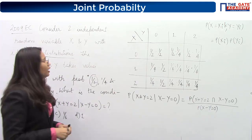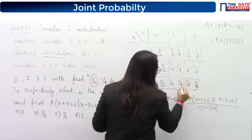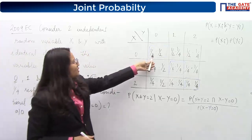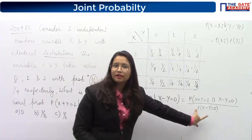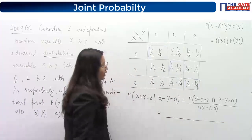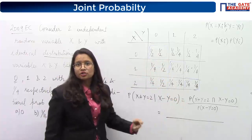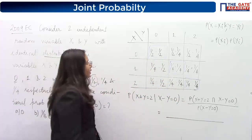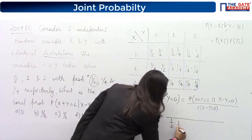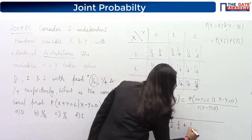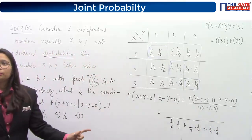X minus Y = 0 means X equals Y. Looking at the table, the diagonal elements represent those cases: X=0,Y=0; X=1,Y=1; X=2,Y=2. The probability P(X−Y=0) is the sum of these diagonal probabilities — since these are mutually exclusive cases, we add them: 1/4 + 1/4×1/4 + 1/4×1/4.